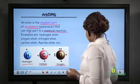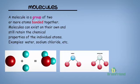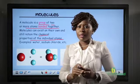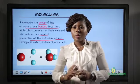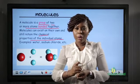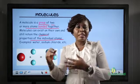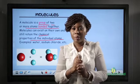What is a molecule? A molecule is a group of two or more atoms bonded together. But unlike the atoms, molecules can exist on their own and still retain the chemical properties of the individual atoms. This means that an atom can bond with another atom of the same element or another atom of a different element to form a molecule.